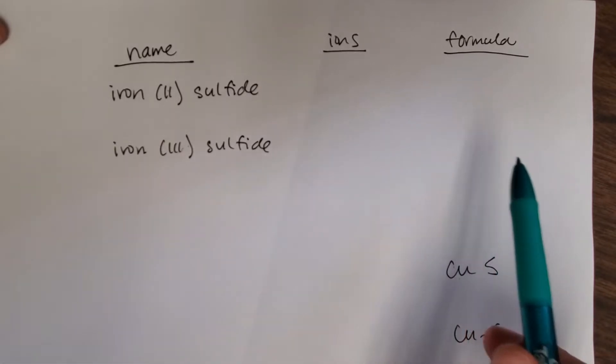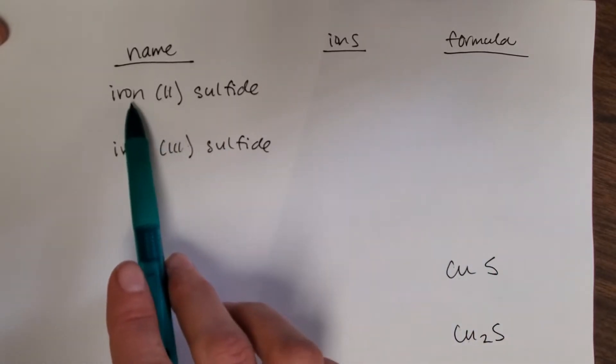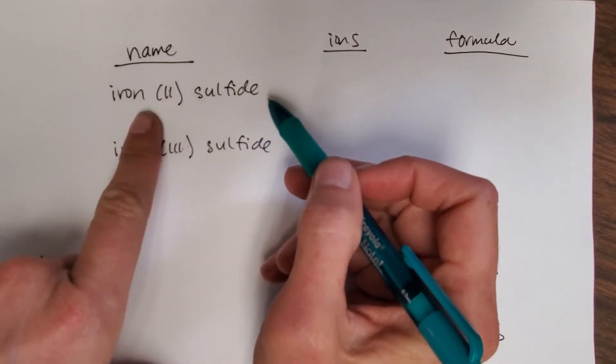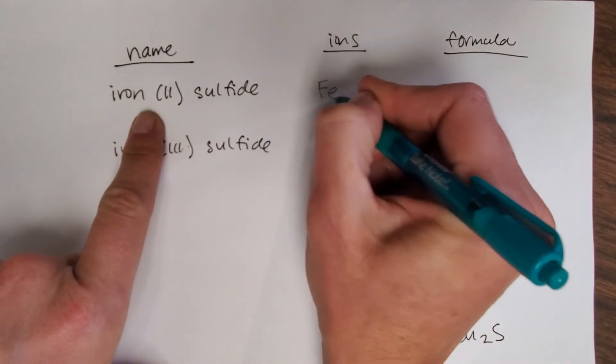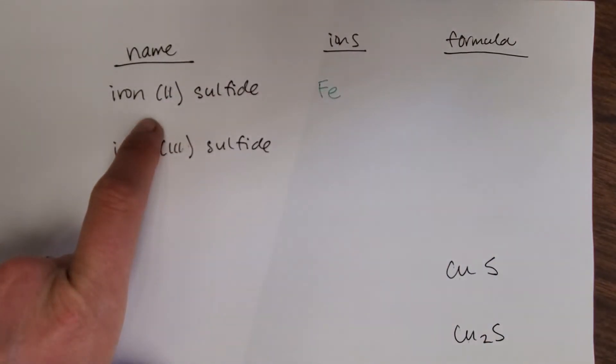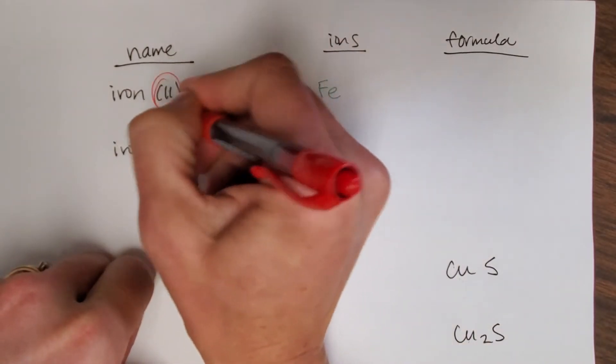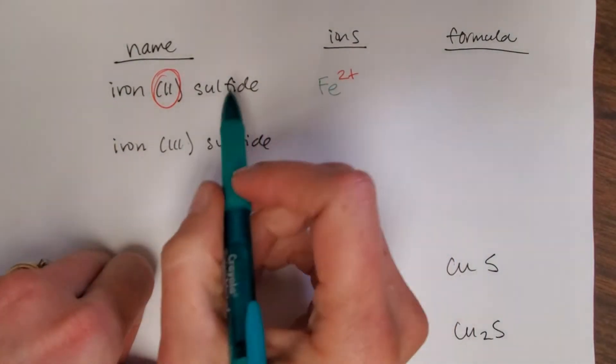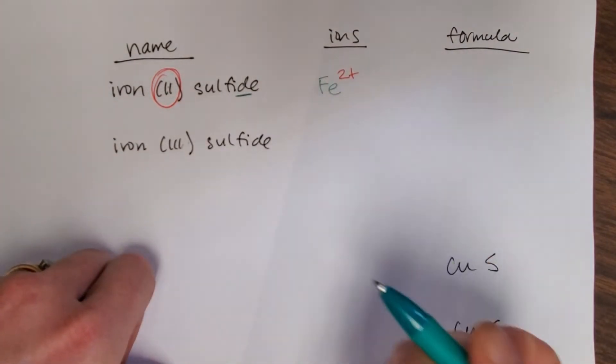I think going from names to formulas is easier, so we'll start with the easy thing. This is iron(II) sulfide. Let's start with the iron here. This is Fe and the two tells me the charge of that iron, so that would be iron 2+.